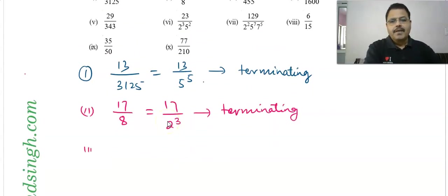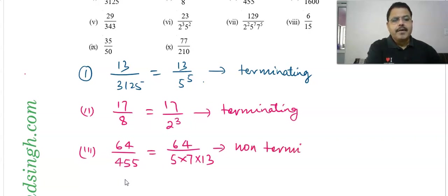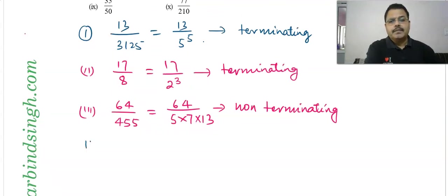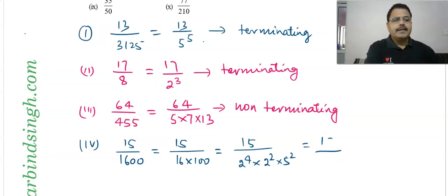Question 3: 64/455. We need to factorize 455 to determine if it is terminating or non-terminating. Question 4: 15/1600. Here 1600 = 16 × 100 = 2⁴ × (2² × 5²) = 2⁶ × 5². After simplification with the numerator 15 = 3 × 5, the 5 cancels, giving 3 upon 2⁶ × 5¹ — which is in the form 2^m × 5^n, so it is terminating.